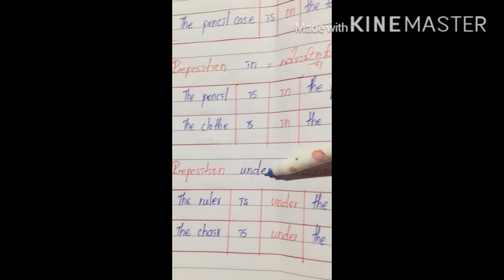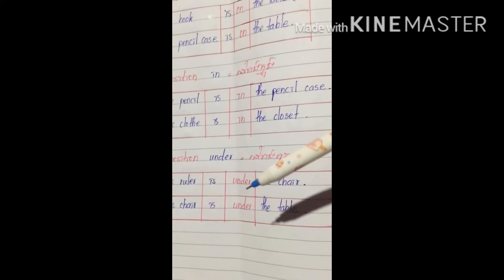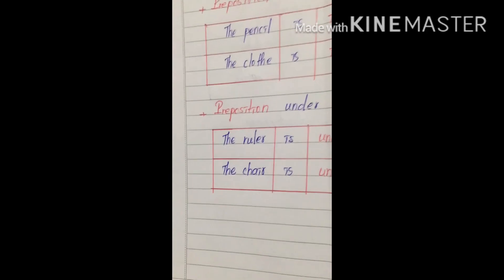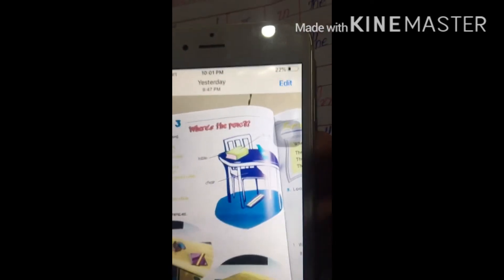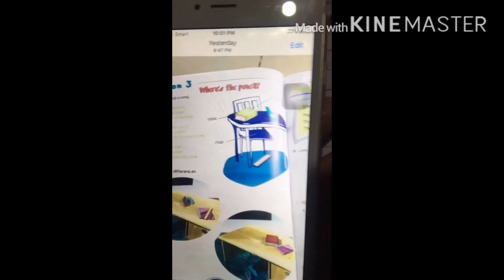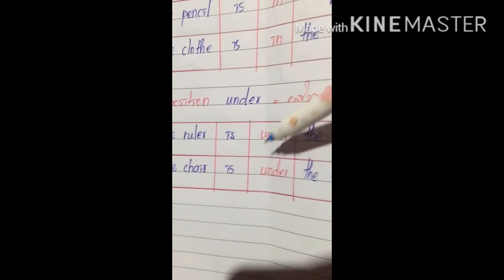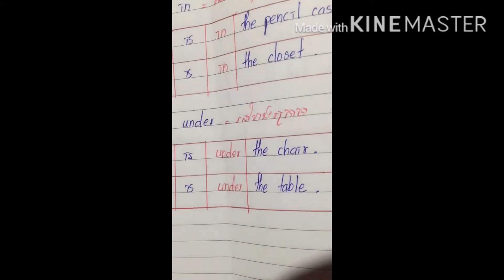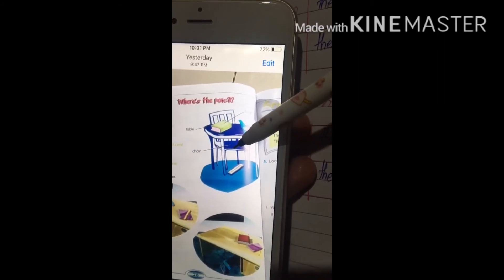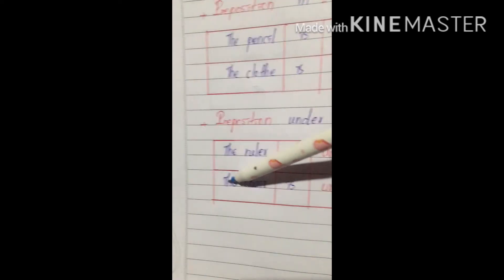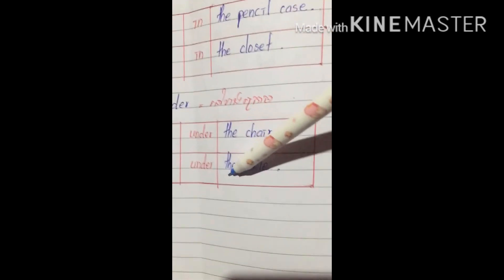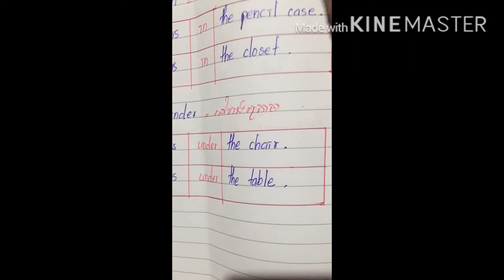Now preposition 'under'. Where is the ruler? The ruler is under the chair. And looking at the picture, the chair is under the table. So: the chair is under the table.